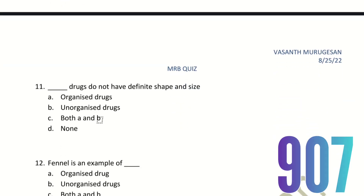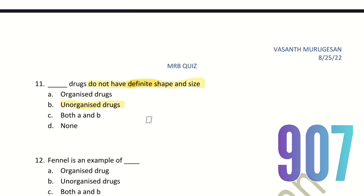Eleventh question: Which drugs do not have definite shape and size? The choices are Organized Drugs, Unorganized Drugs, both A and B, and none. If drugs have definite shape and size, they are Organized Drugs. Unorganized Drugs do not have definite shape and size — that is the right answer.